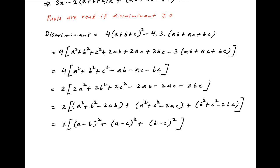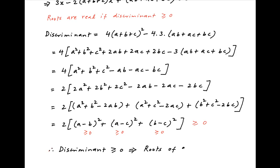Notice that all three terms in the square brackets are greater than or equal to 0. Therefore, the discriminant of the given quadratic equation is greater than or equal to 0, which implies that the roots of this equation are real. This is the required result.